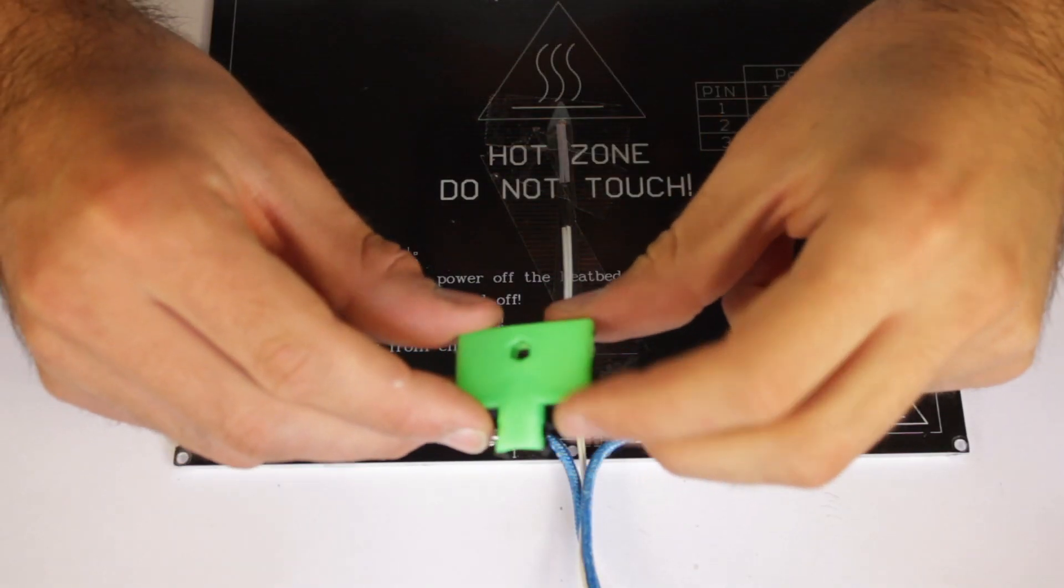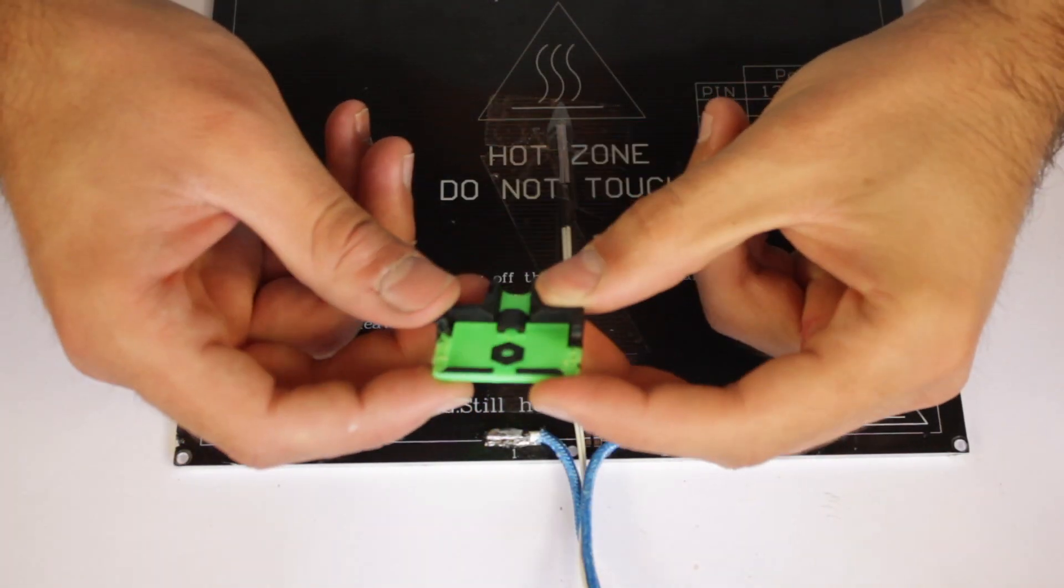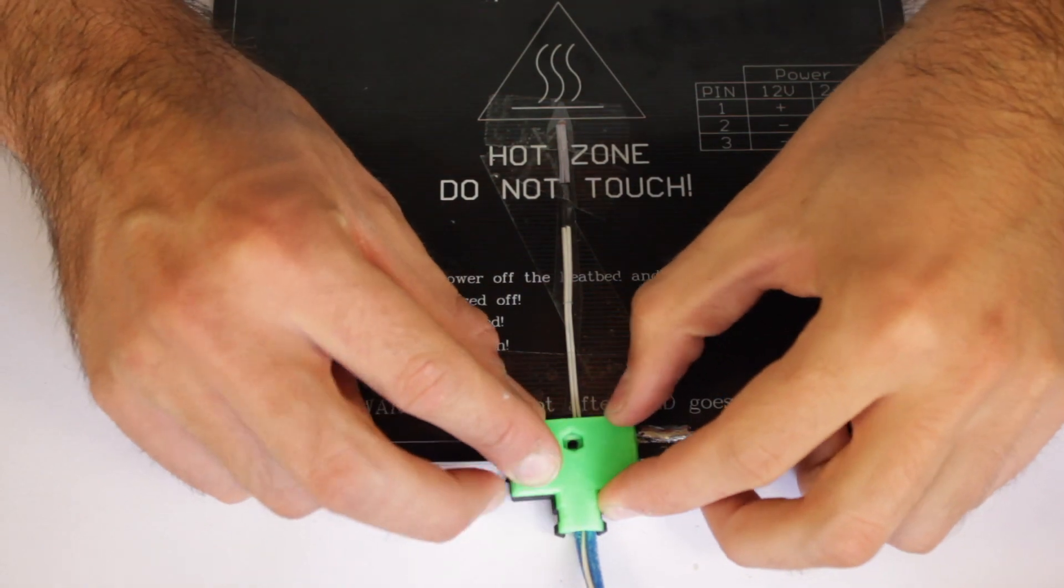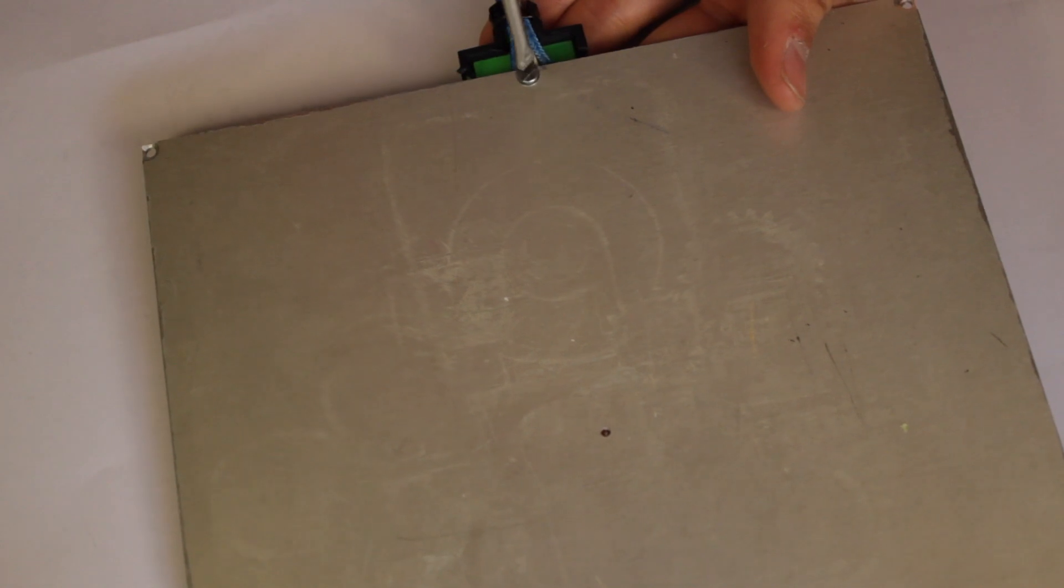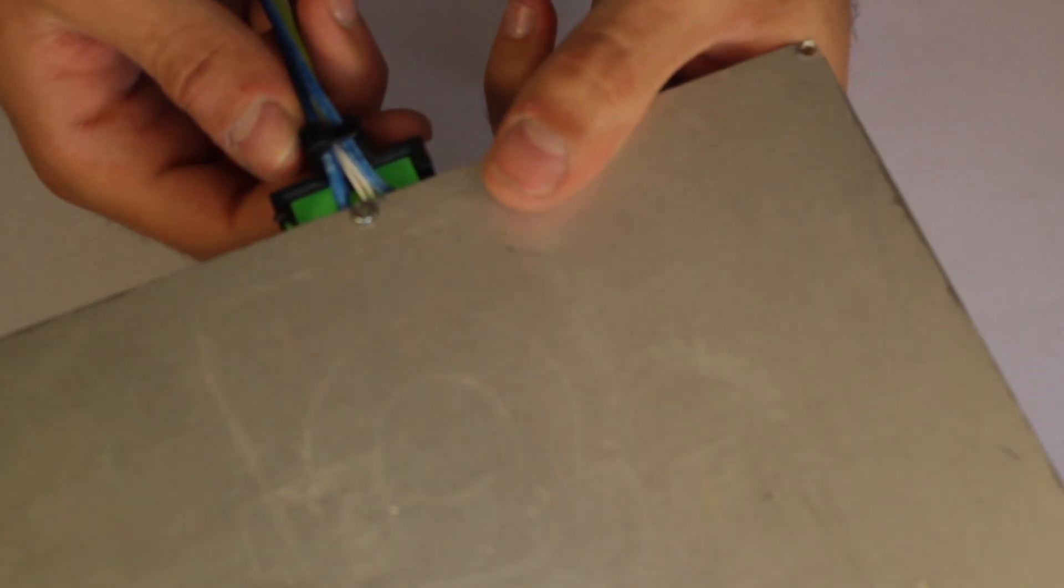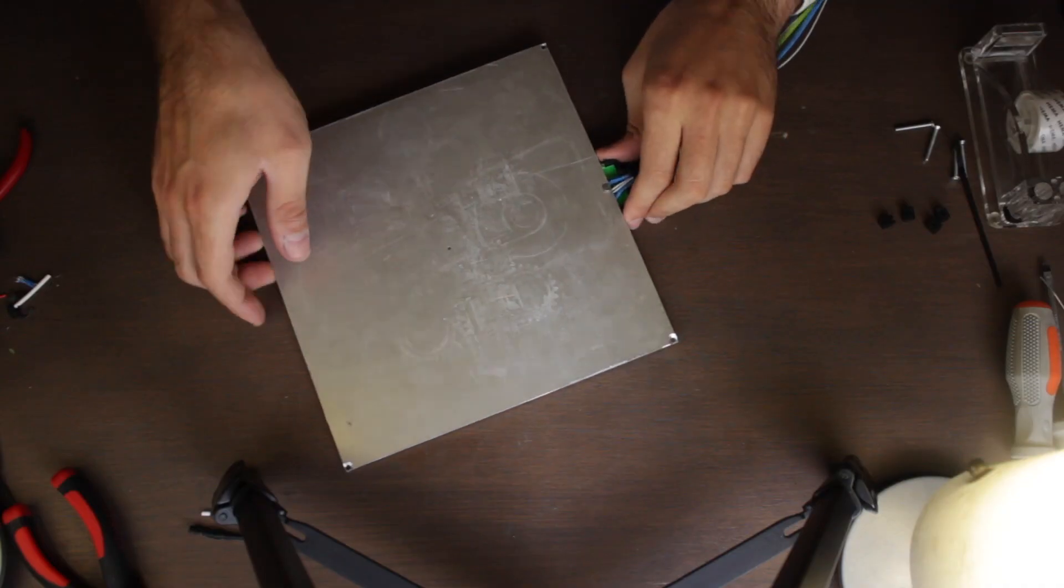Then we'll use the 3D printed cable holder I have uploaded in STL and place it covering the cables. We'll install it in place using an M3 hex nut in the embedded gap and a 10mm M3 screw. After assembling it, we'll grab the cables together using a zip tie and it will look more or less like this.